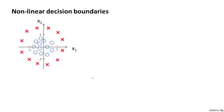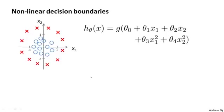Let's now look at a more complex example where I have crosses for positive examples and O's for negative examples. Given a training set like this, how can I get logistic regression to fit this sort of data? Just as with polynomial regression or linear regression, we can add extra higher-order polynomial terms to the features, and we can do the same for logistic regression. Concretely, let's say my hypothesis includes x1 squared and x2 squared as extra features, so I now have five parameters, theta 0 through theta 4. We'll defer to the next video our discussion of how to automatically choose these parameter values.